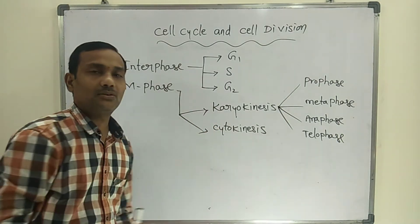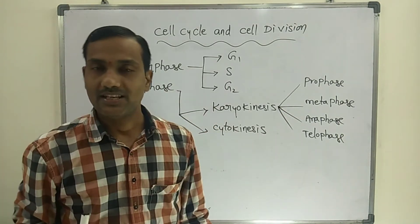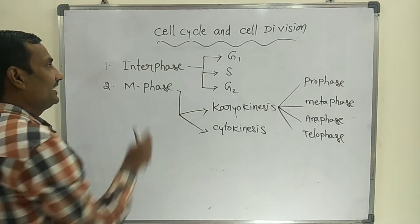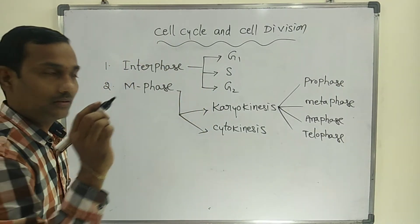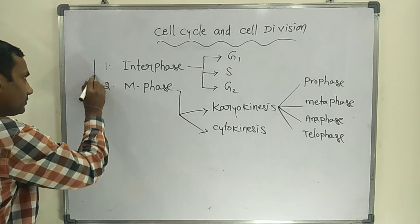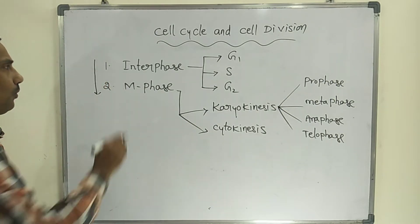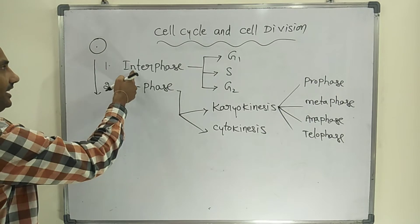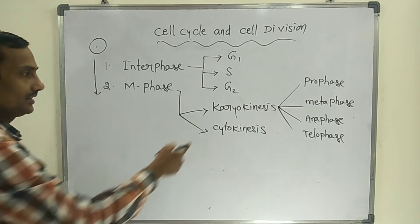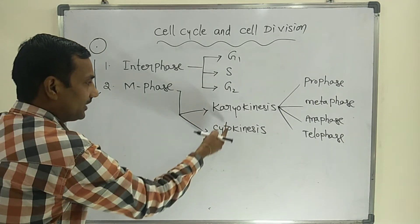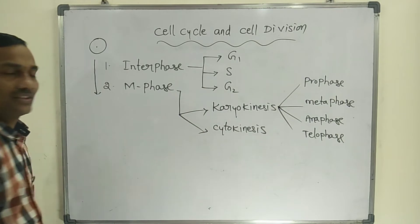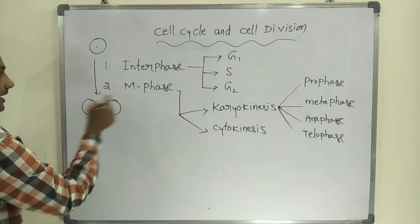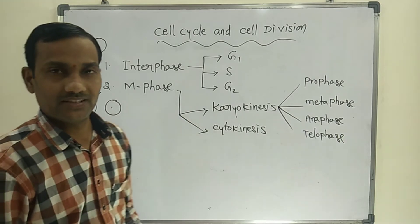At the end of cytokinesis, two cells will form. The cell cycle includes these two phases. One single cell enters into interphase and M phase — including karyokinesis and cytokinesis — and two daughter cells will form at the end of M phase.